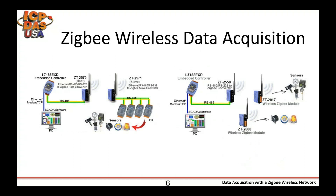Which brings us to data acquisition with a ZigBee network. Data acquisition is the process of sampling real-world physical information and converting those samples into signals that an electrical device can understand. Our data acquisition devices support a wide range of inputs and outputs, both digital and analog — RTD, thermistor, thermocouple voltage, etc. The data acquired can be logged and displayed in the control center and/or sent to a PLC for M2M applications, as you can see with the gauges, alarms, and start/stop commands.